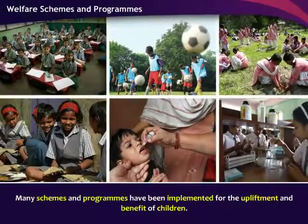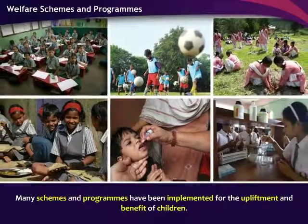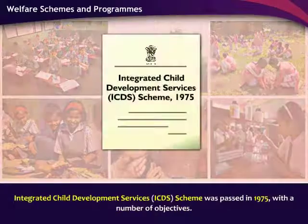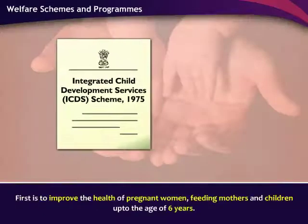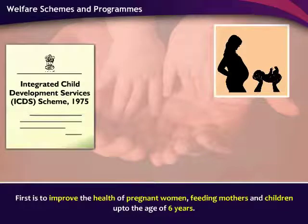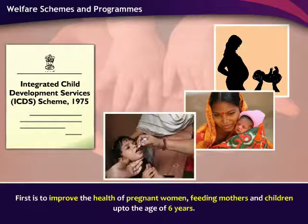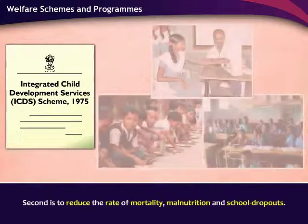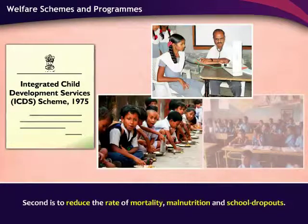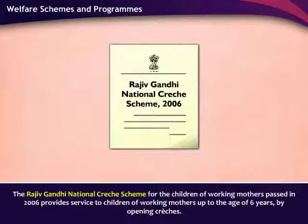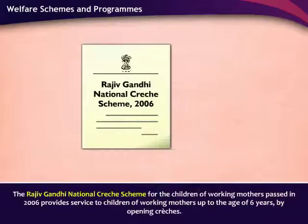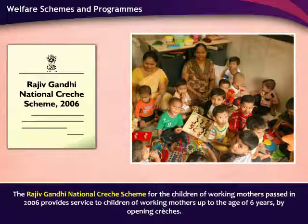Many schemes and programs have been implemented for the upliftment and benefit of children. The Integrated Child Development Services or ICDS scheme was passed in 1975 with objectives including improving the health of pregnant women, feeding mothers and children up to the age of 6 years, and reducing the rate of mortality, malnutrition and school dropouts. The Rajiv Gandhi National Crèche Scheme for the Children of Working Mothers, passed in 2006, provides service to children of working mothers up to the age of 6 years by opening crèches.